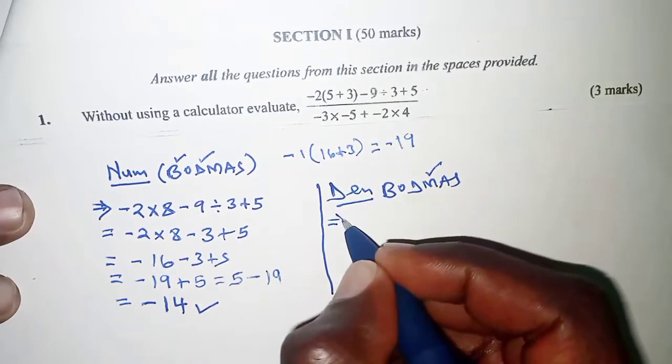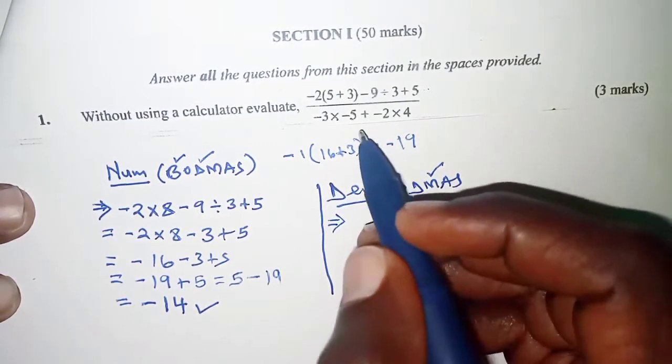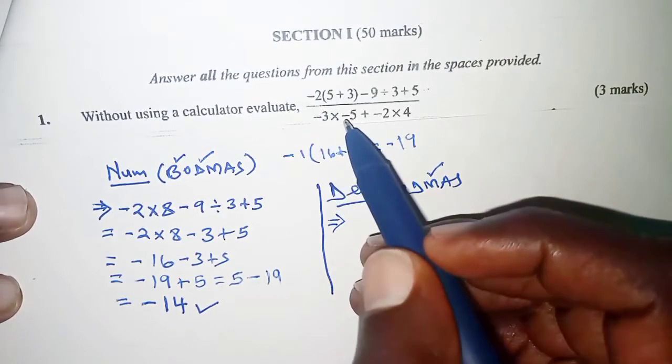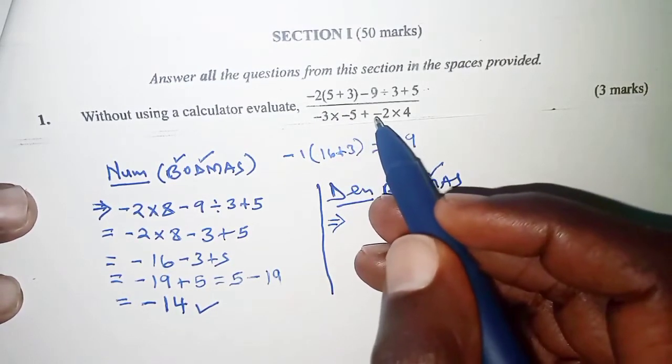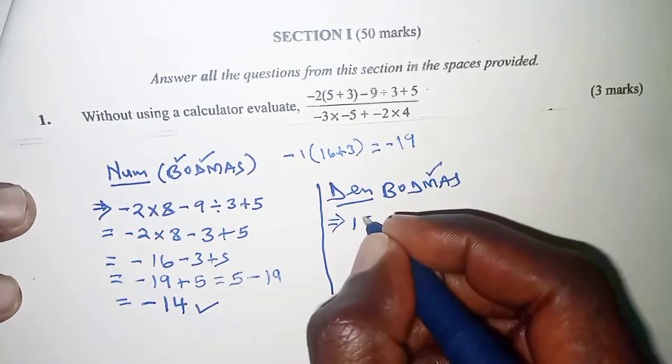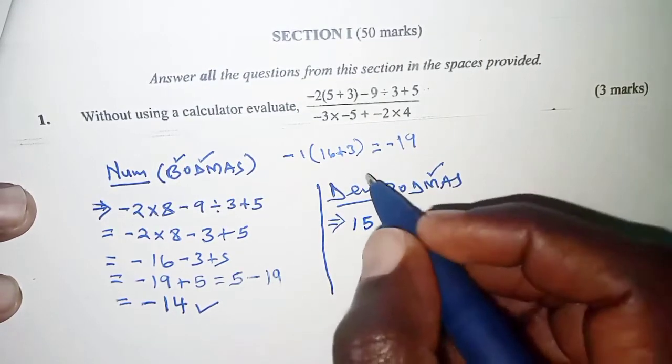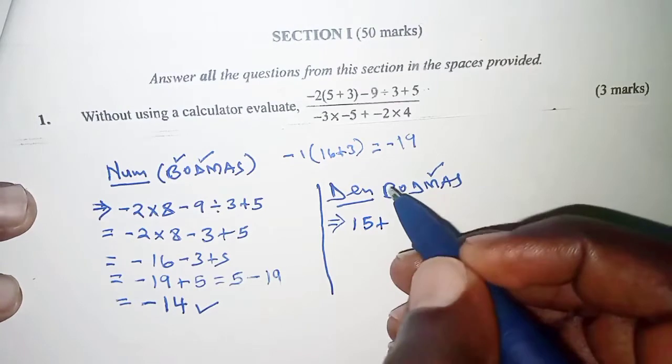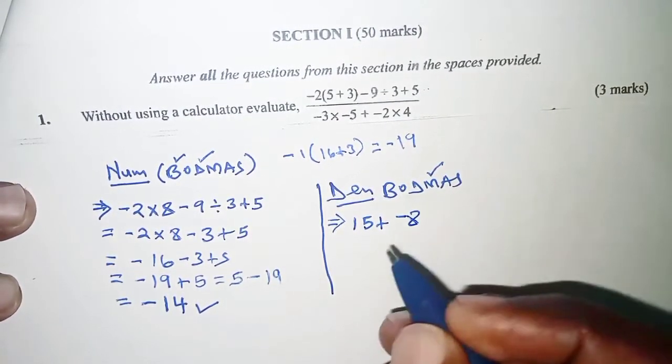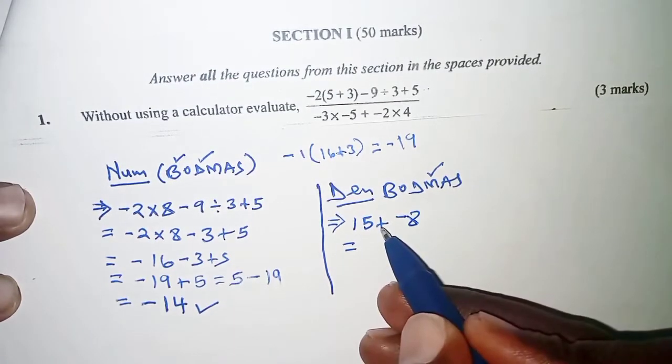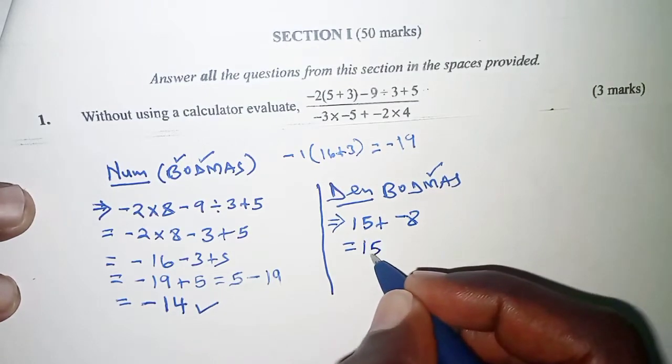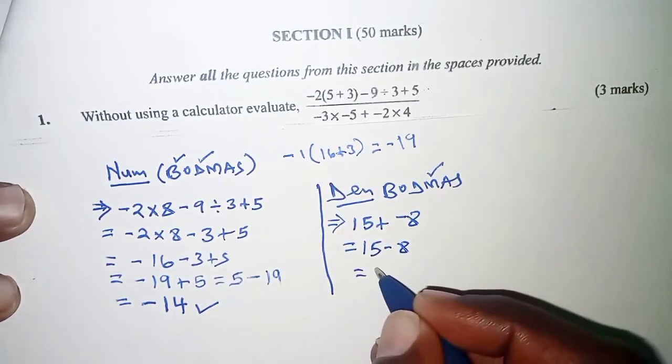In the first step here, we're going to multiply. We have multiplication between negative 3 and negative 5 and also between negative 2 and 4. We're going to multiply negative 3 by negative 5, that is 15. And then we have plus. Again, we multiply negative 2 by 4, that is negative 8. Positive followed by a negative should give us a negative. So we have 15 minus 8, and that is finally 7.